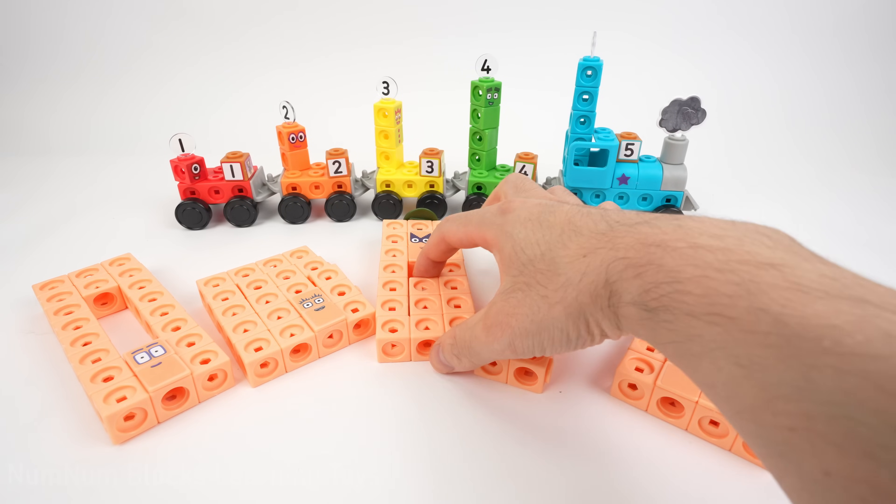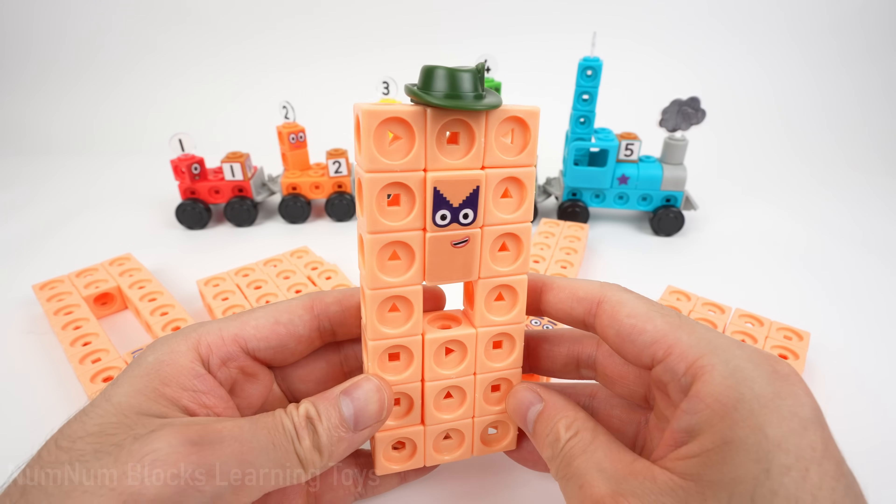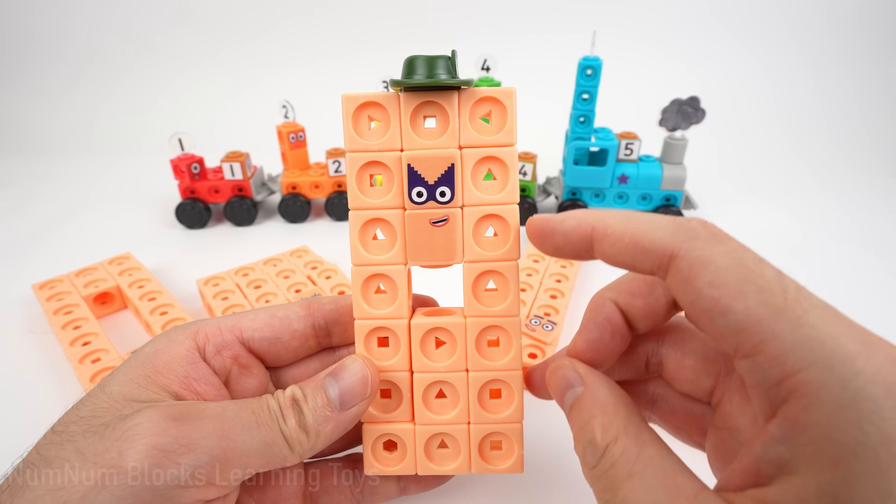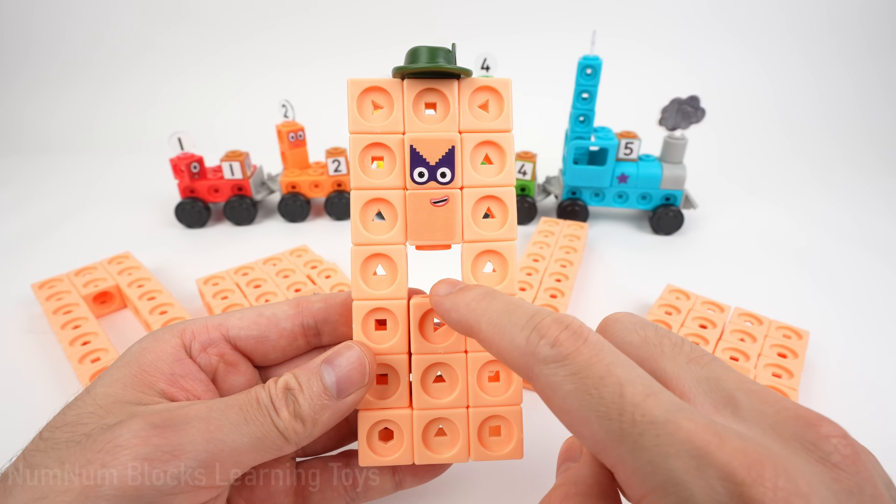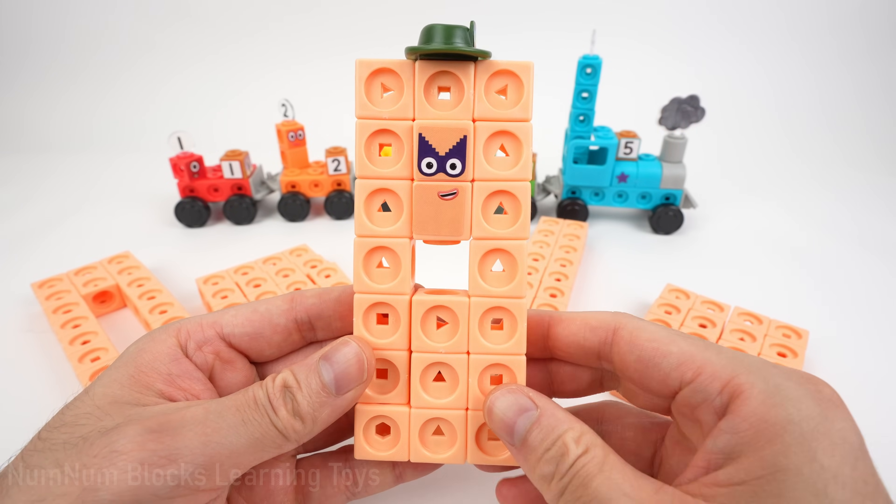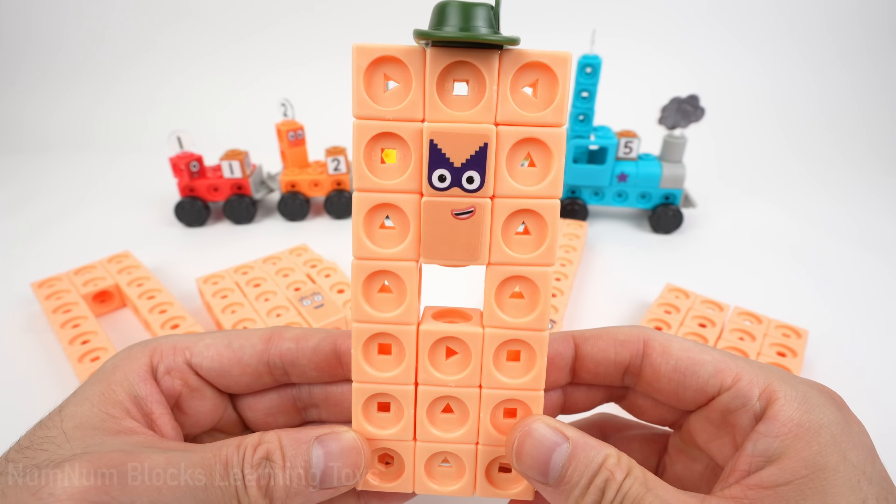Let's start with the number block in the middle. Do you know this number? This number block is wearing a hat. Look, it's missing a number block in the middle. It's the famous explorer, 21.